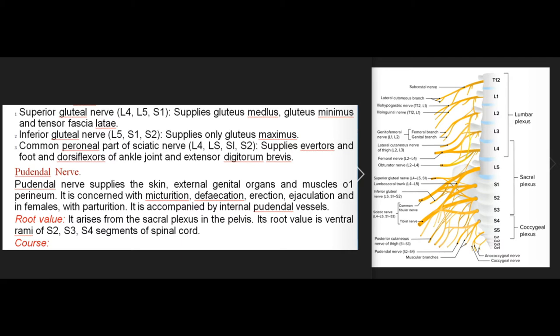Pudendal nerve supplies the skin, external genital organs and muscles of the perineum. It is concerned with micturition, defecation, erection, ejaculation, and in females with parturition. It is accompanied by internal pudendal vessels. Root value: it arises from the sacral plexus in the pelvis with ventral rami of S2, S3, S4 segments of the spinal cord.